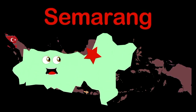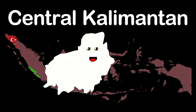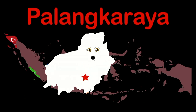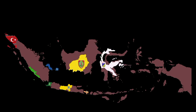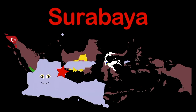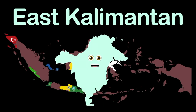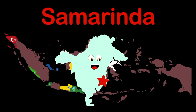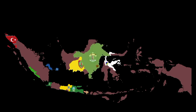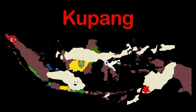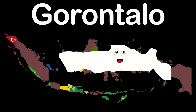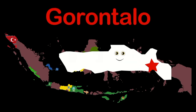I'm Central Java — my capital's Semarang. I'm Central Kalimantan, north of the island of Java; Palangkaraya is my capital. I'm Central Sulawesi — my capital's Palu. I'm East Java — capital's Surabaya. I'm East Kalimantan, in the east of the island of Borneo; Samarinda is my capital. East Nusa Tenggara is the southernmost province — Kupang is my capital. I'm Gorontalo province on Sulawesi island; my capital's Gorontalo. Jakarta is Indonesia's capital.